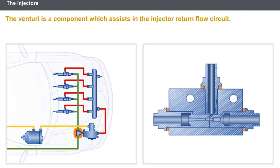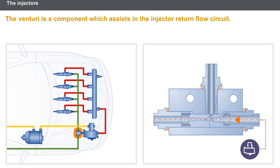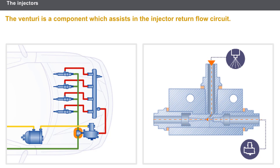The injector fuel return circuit may be equipped with a venturi. The venturi is a component which assists in the injector return flow circuit and ensures that the injectors operate uniformly.